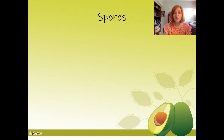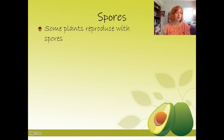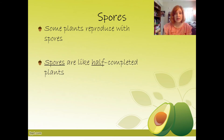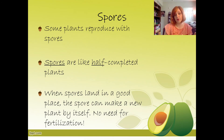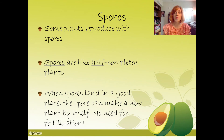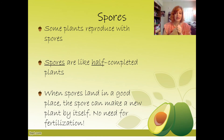The last topic to cover is spores. Some plants reproduce with spores — they don't reproduce with seeds. A spore is like a half-completed plant. When a spore is given off by the parent plant and lands in a good place with soil, it can just start growing into another plant by itself — it doesn't need to be fertilized. Remember, to get a seed you need fertilization: the pollen grain sticks on the stigma, goes down to the ovary, and fertilizes the egg. The spore doesn't need that because it already has everything it needs — it just goes out into the world and makes another plant.